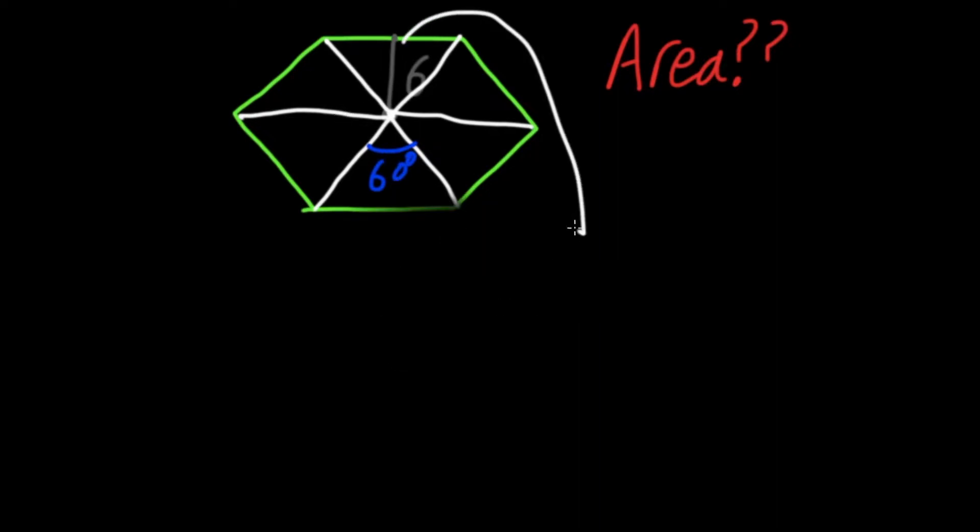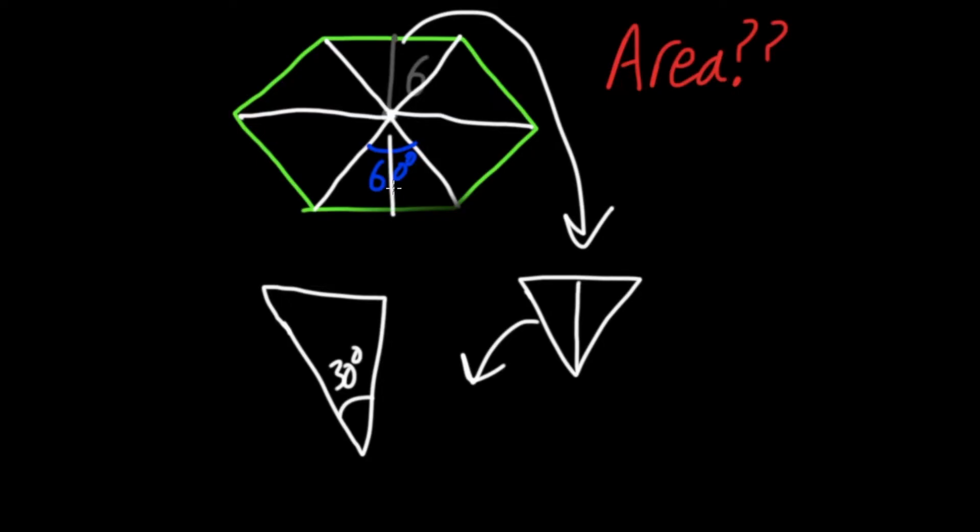But if we look at this triangle here, we have split it up into two smaller triangles with this line here. That means that if we just take one of these triangles here, say this side, this is only 30 degrees, because it would be half of the 60.